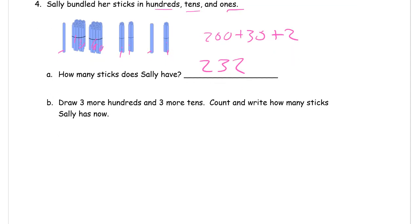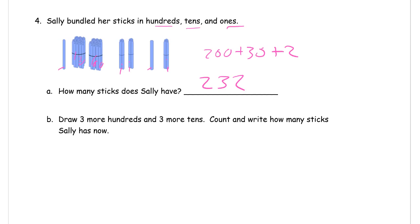Draw three more hundreds and three more tens. Okay, so there's a hundred. It just looks like a bigger, a wider bundle. One, two, three. I'm going to label them hundreds. And three tens. Those are the skinnier bundles. And those are tens.